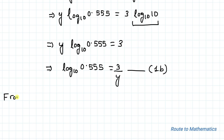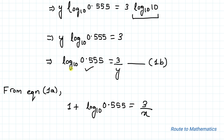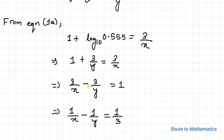From equation 1a, we have 1 + log₁₀(0.555) = 3/x. From equation 1b, log₁₀(0.555) = 3/y. Substituting equation 1b into 1a, we get 1 + 3/y = 3/x. This implies 3/x minus 3/y equals 1, and dividing both sides by 3 gives us 1/x minus 1/y equals 1/3. So the value of 1/x minus 1/y is 1/3. I hope you have understood the solution.